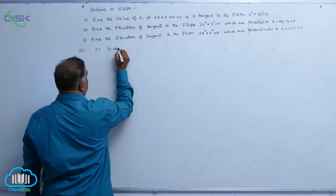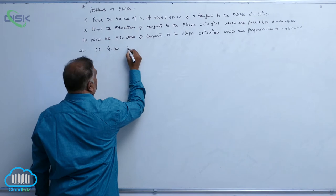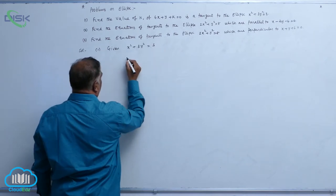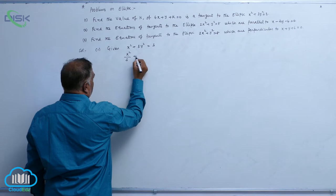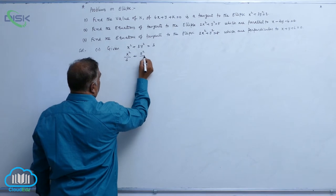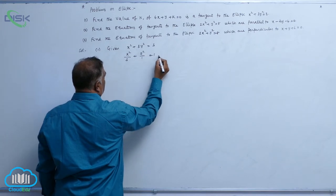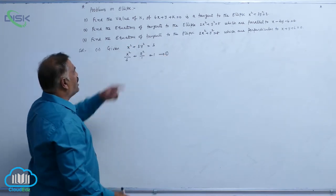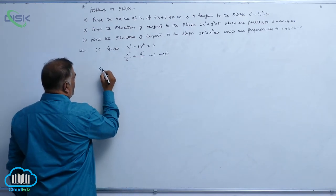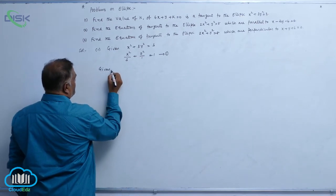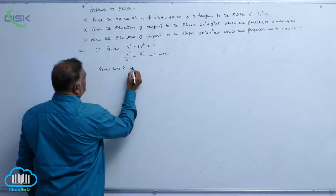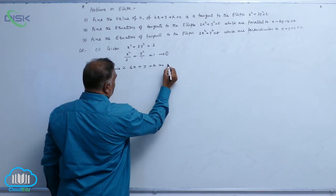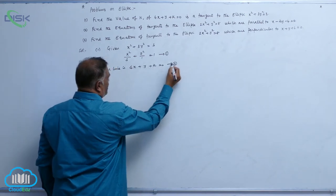The given ellipse is x squared plus 3y squared equal to 3, or x squared by 3 plus y squared by 1 equal to 1 — call it equation 1. The given line is 4x plus y plus k equal to 0 — call it equation 2.